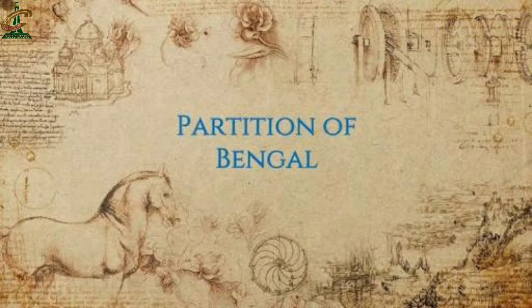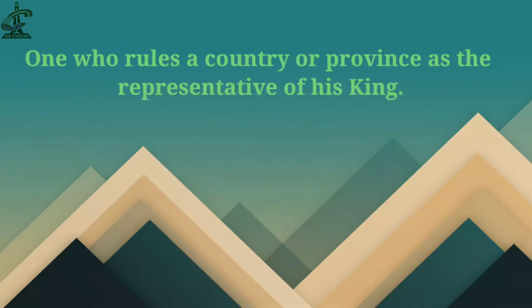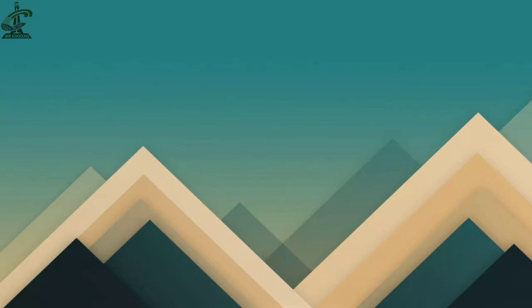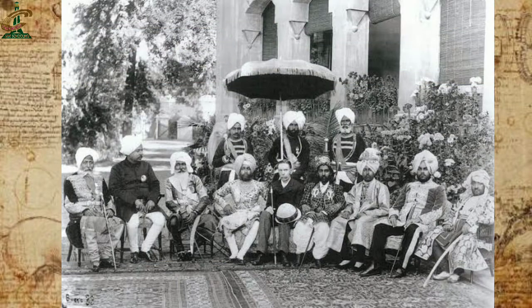In 1905, when Lord Curzon was the Viceroy of India, he suggested to divide Bengal. The very interesting word here is 'viceroy' — who is called a viceroy? One who rules a country or province as the representative of his king. یعنی جو کسی ملک یا صوبے پر اپنے بادشاہ کے نمائندے کی حیثیت سے حکومت کرتا ہے اور جسے ہر طرح کا اختیار حاصل ہوتا ہے۔ Subcontinent میں انگریز حکومت کیا کرتے تھے — برطانیہ سے اپنے کسی نمائندے کو as a representative یہاں بھیجا کرتے تھے، اور اس officer یا representative کو وائسرائے کہا جاتا تھا۔